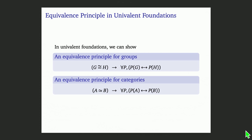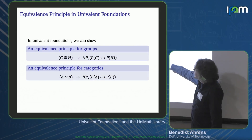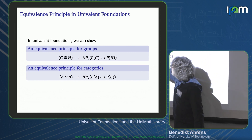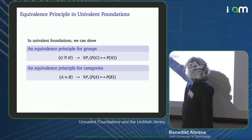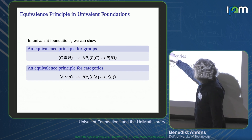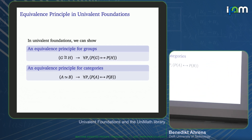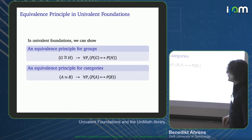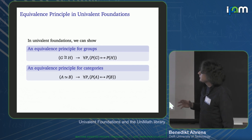Now I fast forward a little bit. In univalent foundations — that is sort of a partial end result of the development — we can show an equivalence principle for groups, or for categories. We can show that any property on groups transfers across an isomorphism of groups, and any property on categories transfers across an equivalence of categories. In univalent foundations, when we state this property, we don't need to know anything about P other than that it is a property of categories.